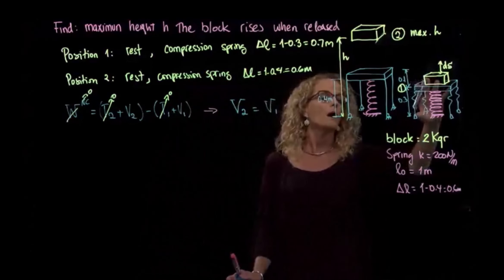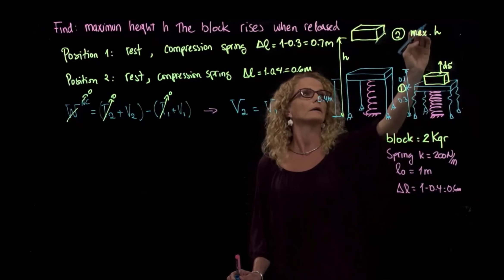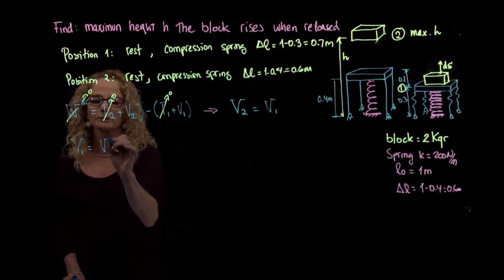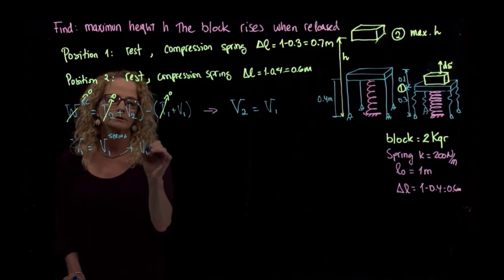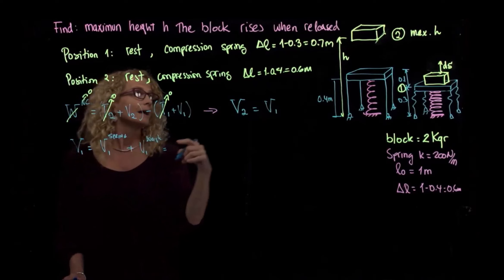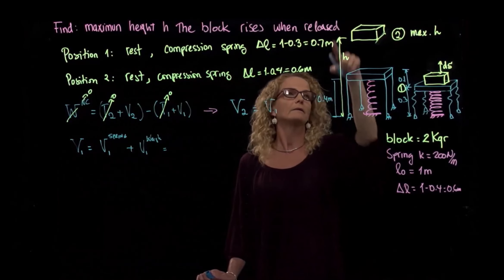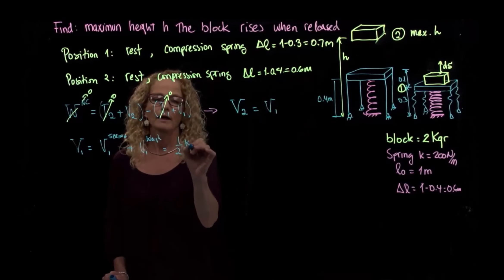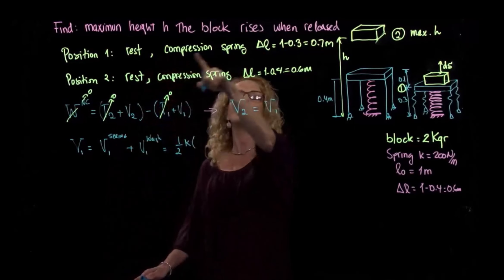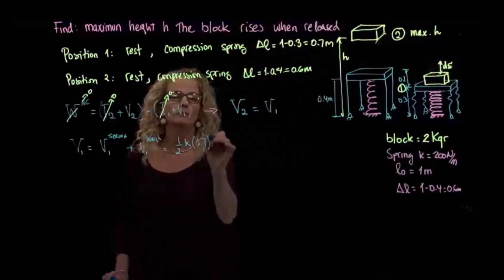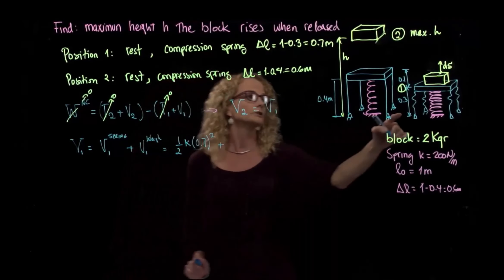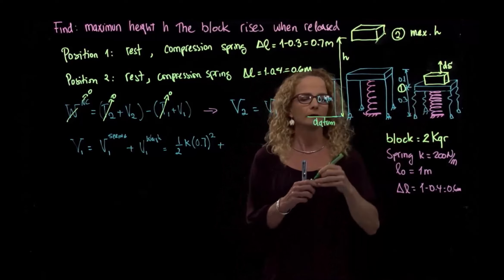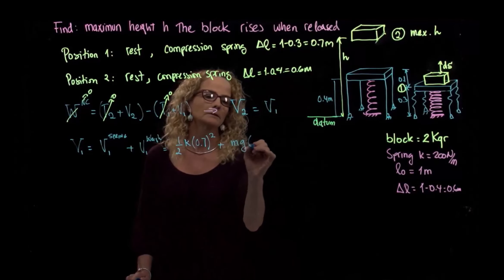This being our position one, we have the height of the block, and the height of the block is right here in position two. Our potential energy in position one will be the potential energy of the spring and the potential energy of the weight. Since we are naming this height, the whole height, the spring, we already said that is one-half k, and we already calculated the deformation of the spring in position one, which is 0.7 squared, and the weight. If we put our datum right here, it already has a height, and it's positive, mg times 0.3.